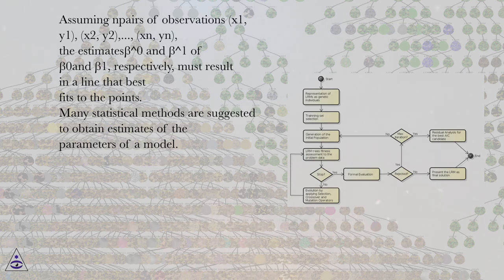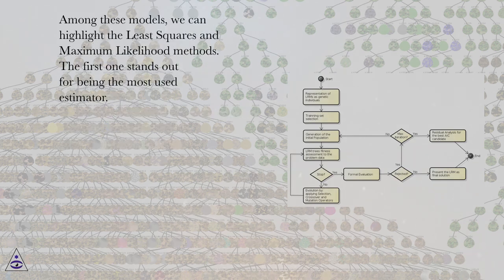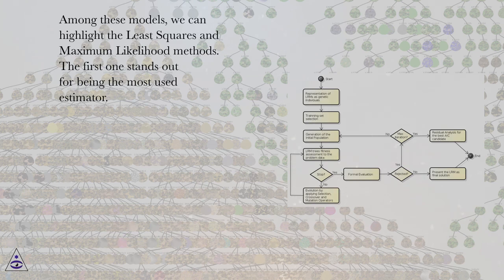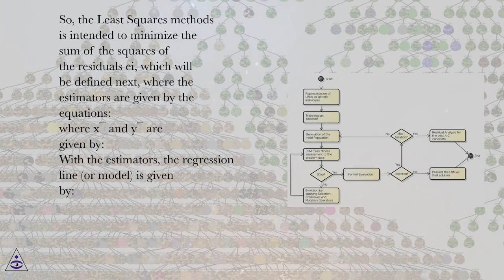Many statistical methods are suggested to obtain estimates of the parameters of a model. Among these models, we can highlight the least squares and maximum likelihood methods. The first one stands out for being the most used estimator. So, the least squares method is intended to minimize the sum of the squares of the residuals εi, which will be defined next, where the estimators are given by the equations.